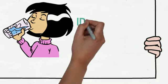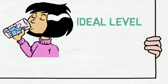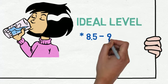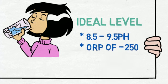Research shows that the ideal level for drinking alkaline water is between 8.5 to 9.5 pH, with an ORP of negative 250.